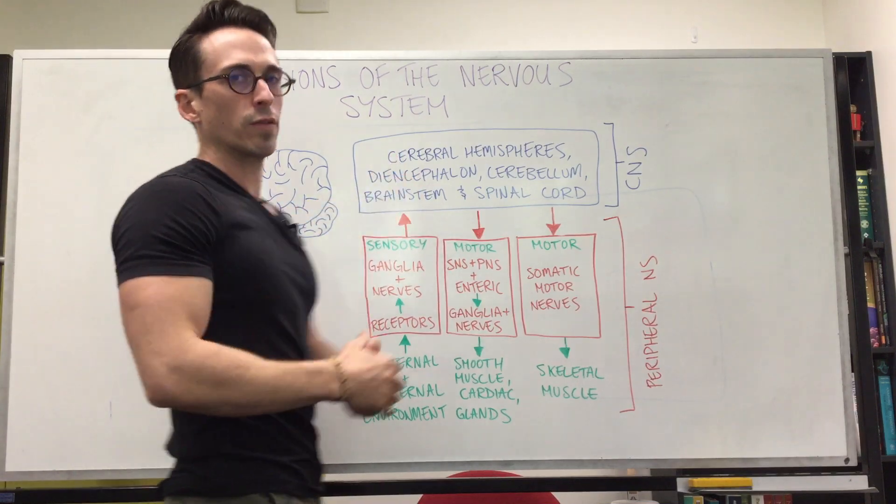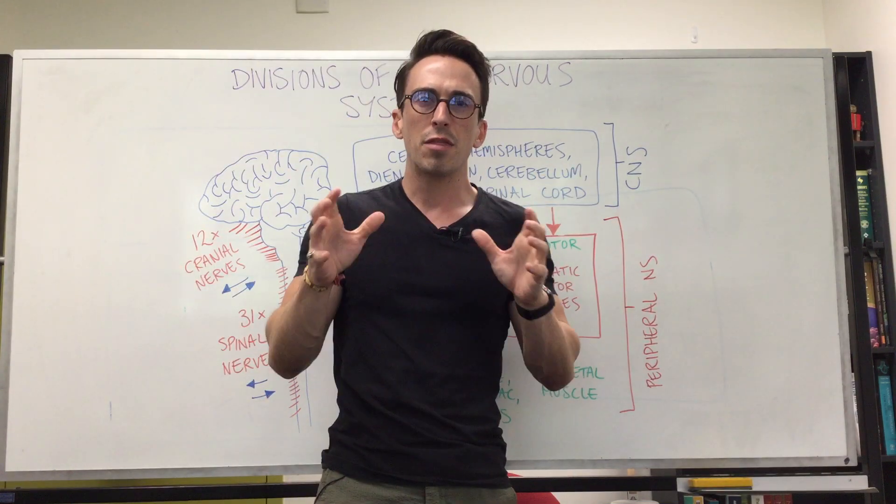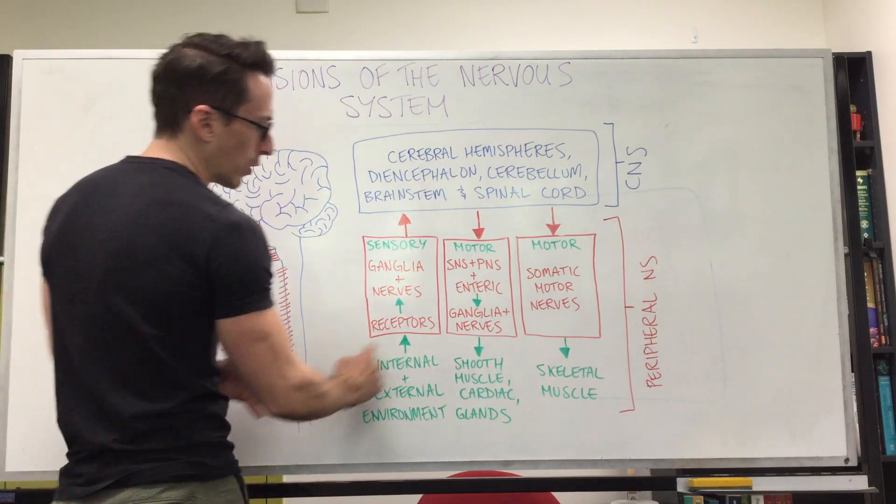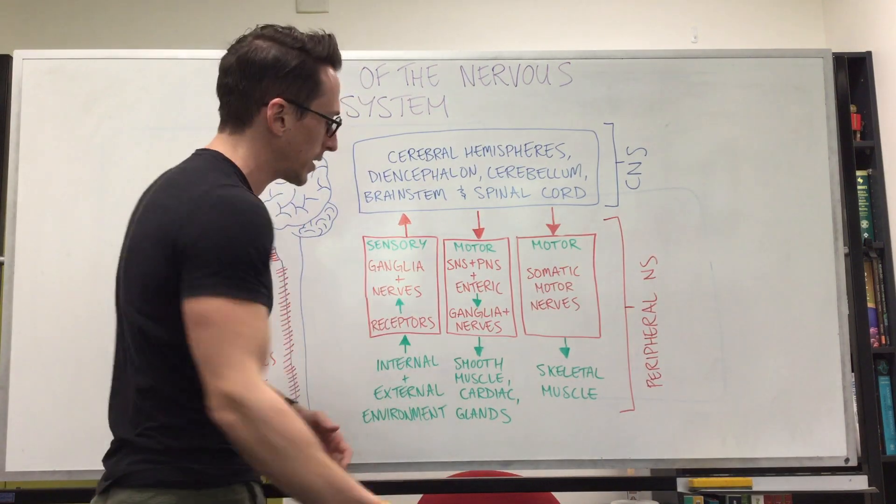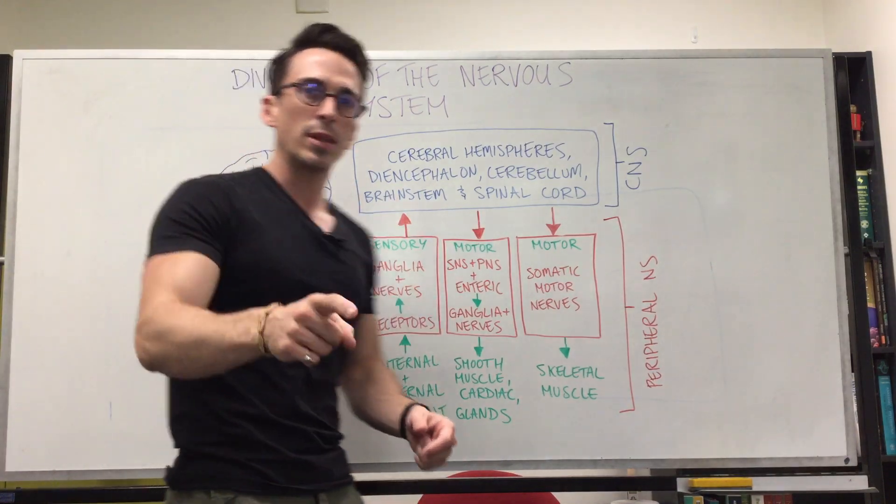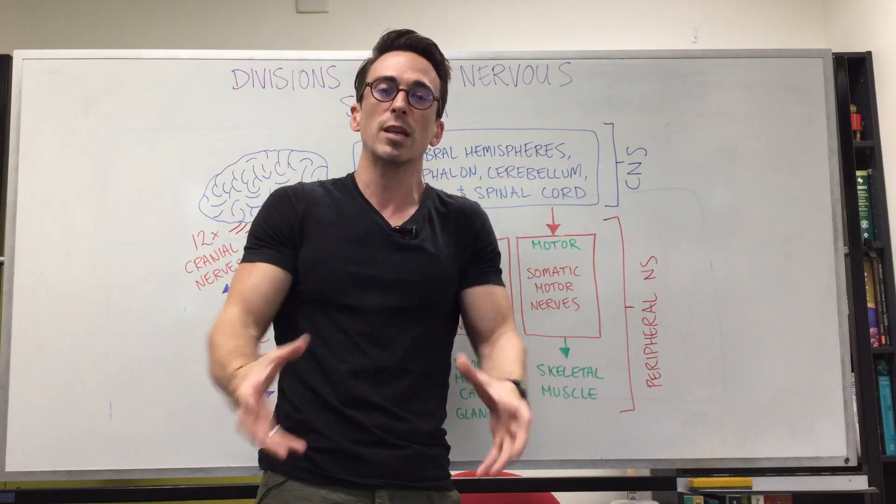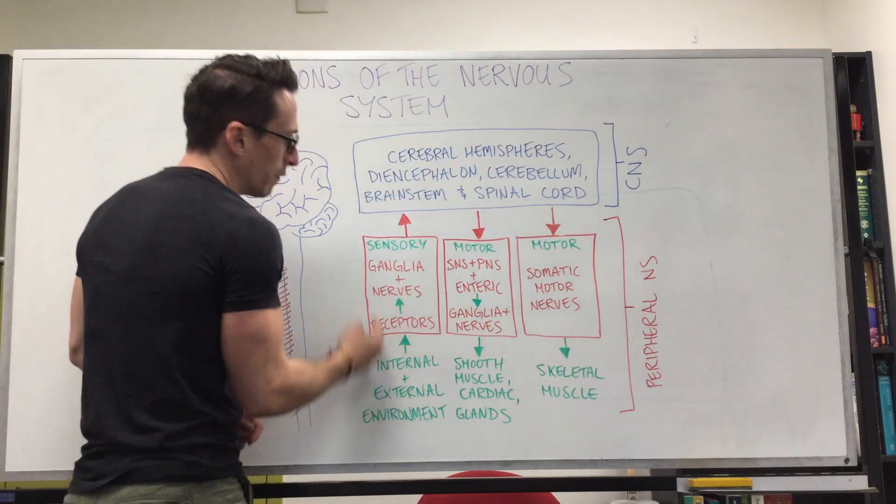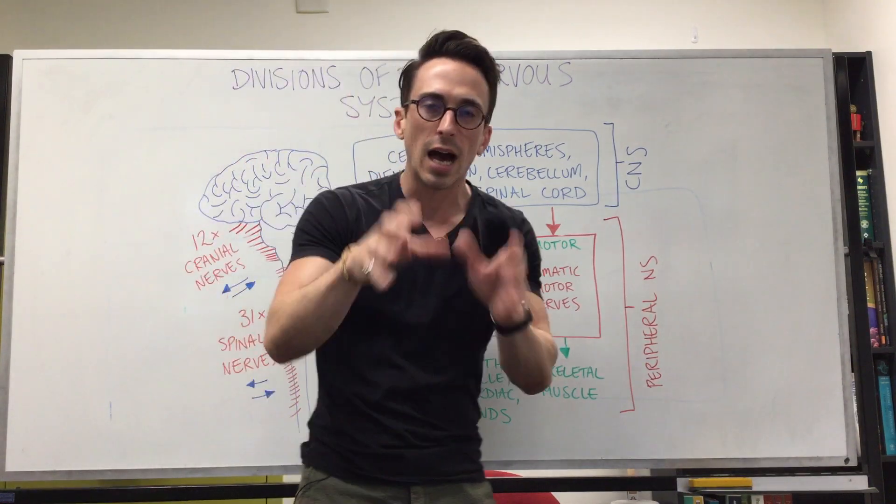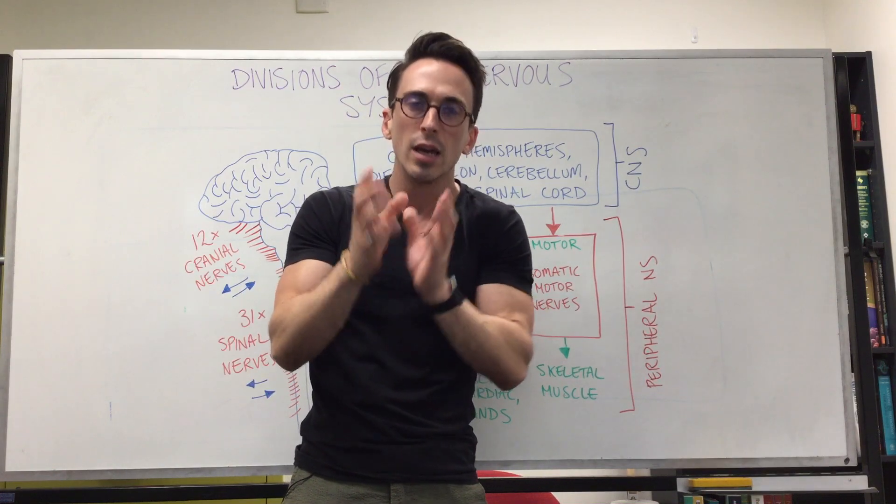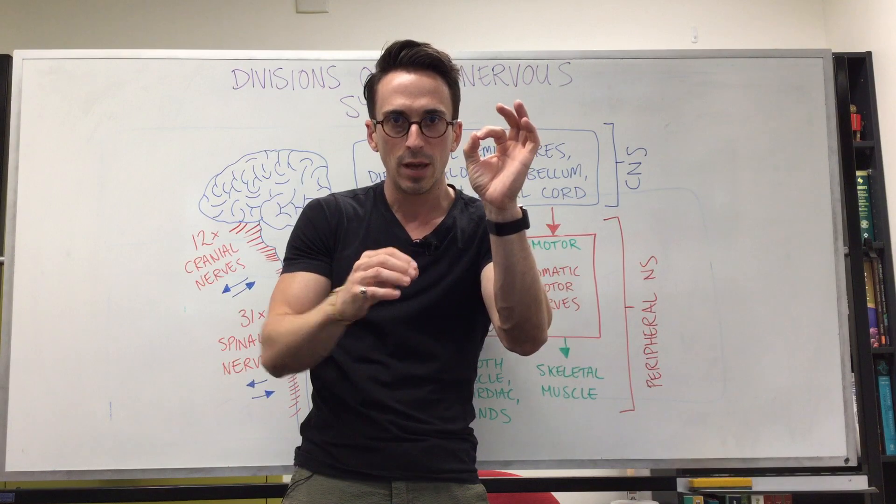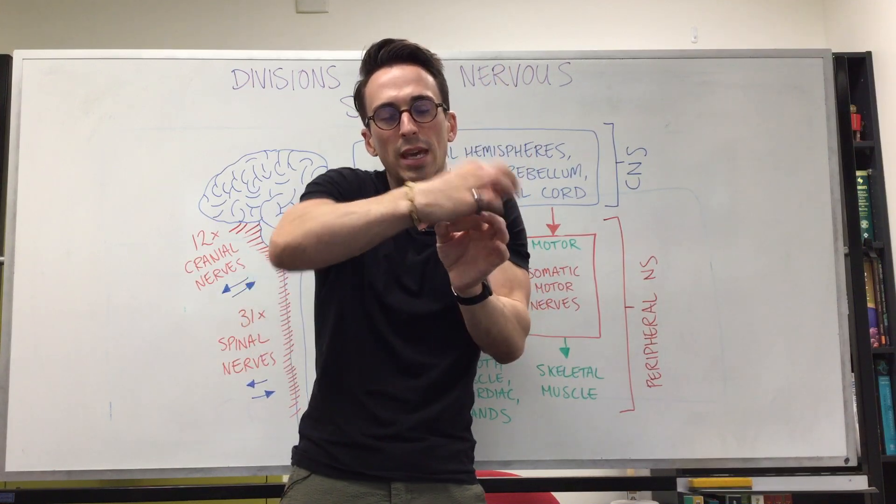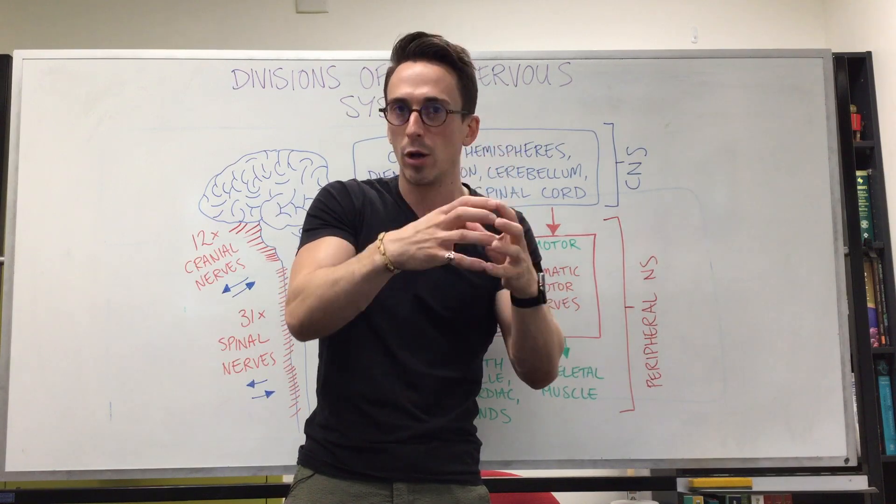Things that are going towards the central nervous system are sensory information. That means things we want to make sense of from the external or internal environment. There's a change, a stimulus, and that stimulus is picked up by receptors. Some receptors are more peripheral or cutaneous, or some can be deep internally in organs. These receptors send signals via nerves through ganglia. Ganglia are groups of nerve cell bodies.